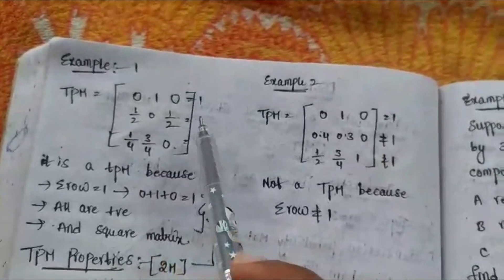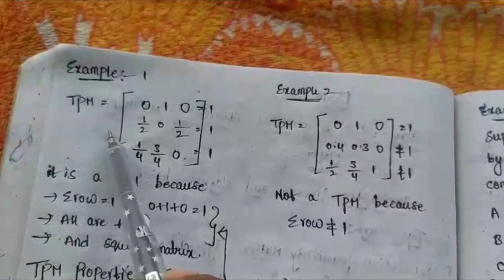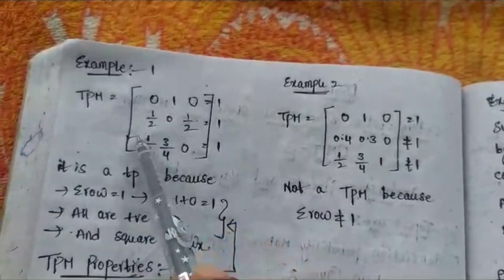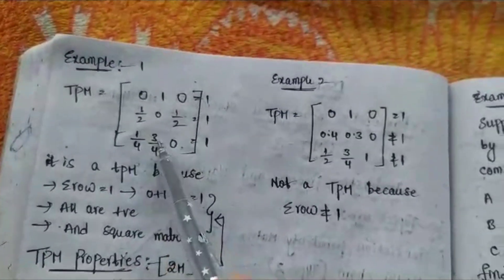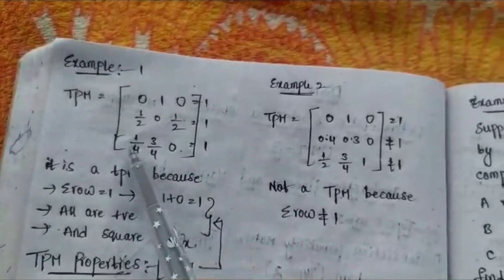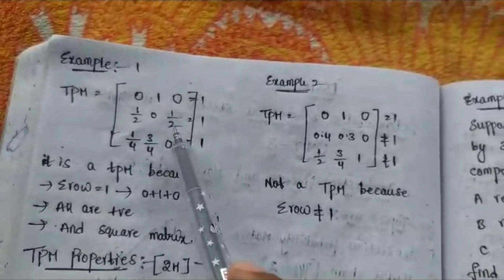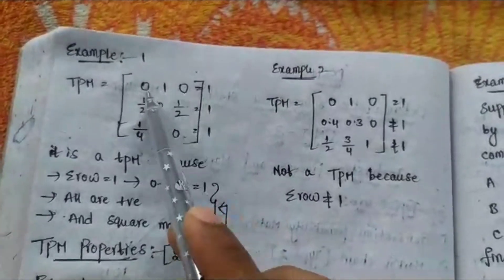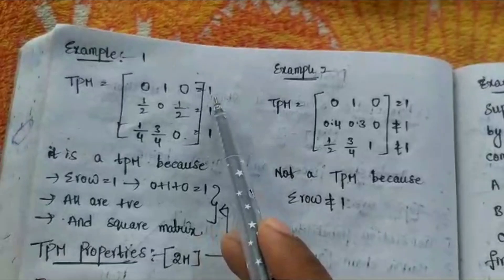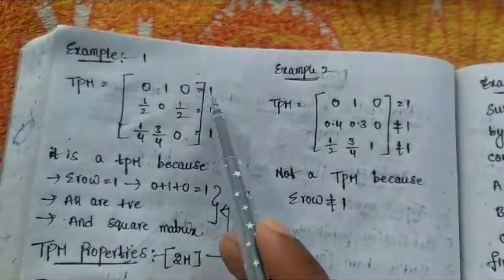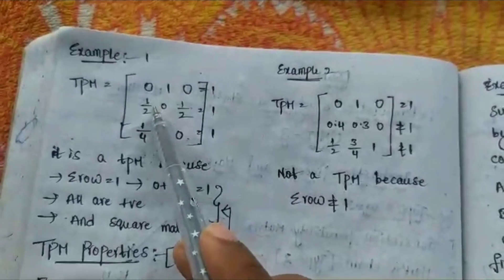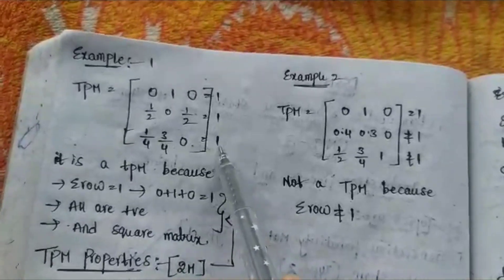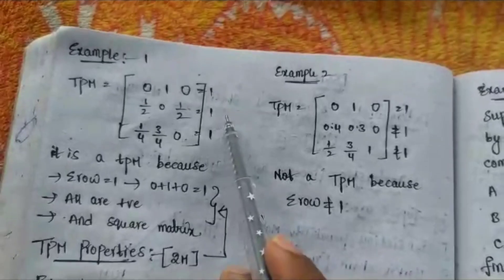Let's take an example to understand the Transition Probability Matrix. The given matrix is: row 1 = [0, 1, 0]; row 2 = [1/2, 0, 1/2]; row 3 = [1/4, 3/4, 0]. All elements are positive — characteristic 1 is validated. The row sums are: 0+1+0=1; 1/2+0+1/2=1; 1/4+3/4+0=1 — characteristic 3 is also validated. It is a 3×3 square matrix, so characteristic 2 is also satisfied.